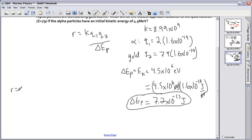So I can finally do it then. So my R then will be K, which is 8.99 times 10 to the 9, times 1 of my Qs, which is 2 times 1.6 times 10 to the minus 19,